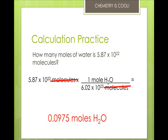Now, what you would do then is convert this to scientific notation. So you get 9.75 times 10 to the negative 2 moles of water.